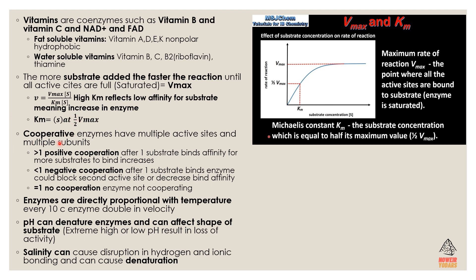Cooperative enzymes have multiple active sites from multiple subunits. A cooperative enzyme with more than one active site requires more substrates to bind, and the affinity for substrate binding increases. If only one substrate binds, the enzyme could block the second active site or decrease binding affinity. If there is just one active site, there is no cooperation — the enzyme binds one substrate, does its reaction, and is done.